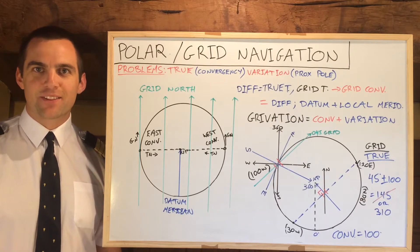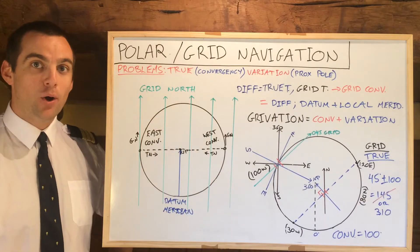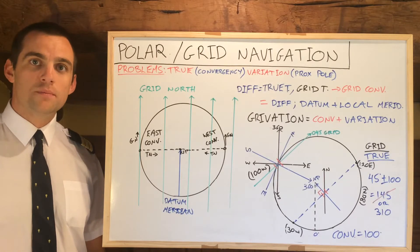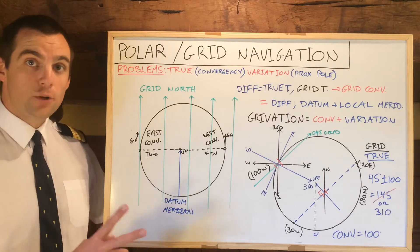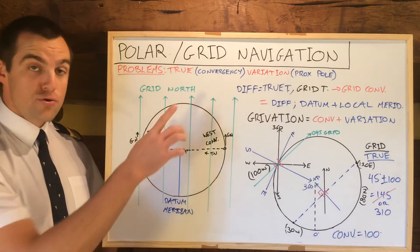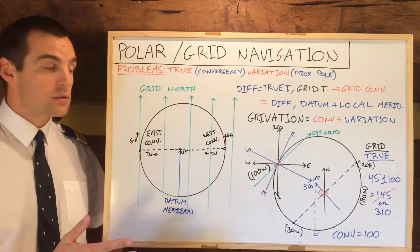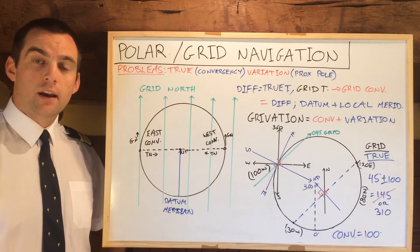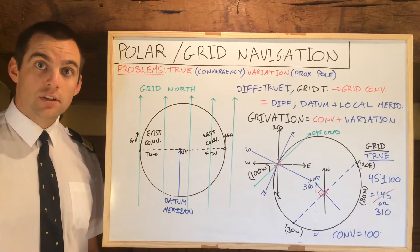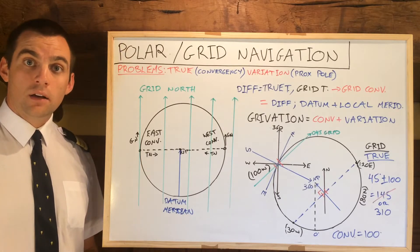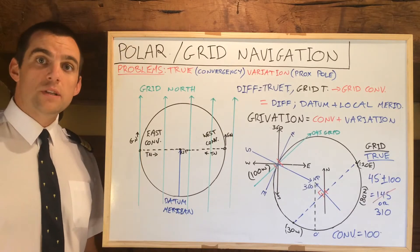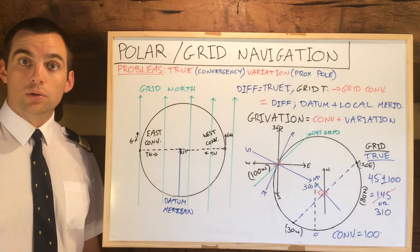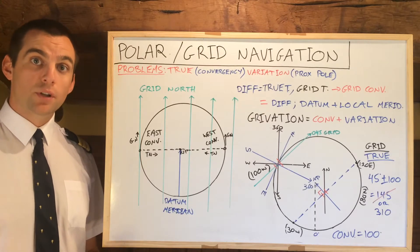Today on ATPL Theory we're going to be talking about polar or grid navigation. First, let's talk about the problems of navigating around the poles. We have two big problems: true track is never constant because of the convergency, and variation changes very rapidly close to the poles. Because of all these problems, we need to find an alternate method of navigating close to the poles, and this alternate method is called grid navigation.